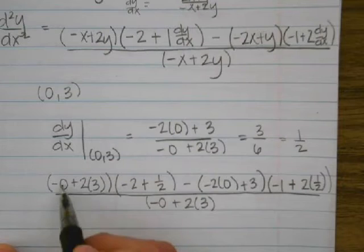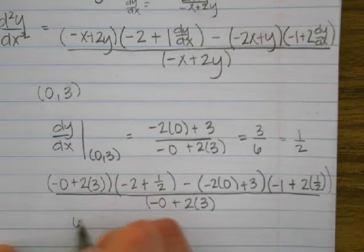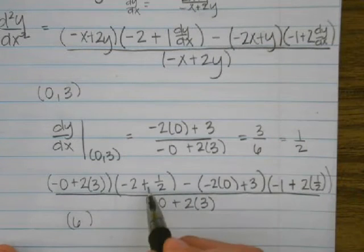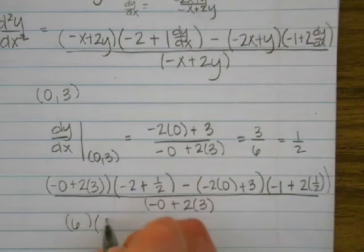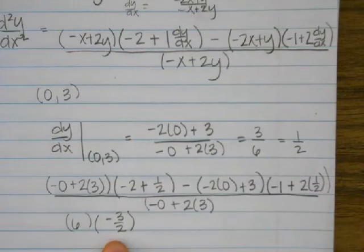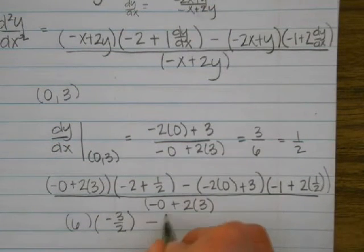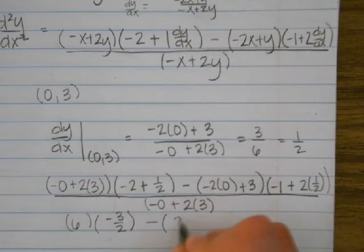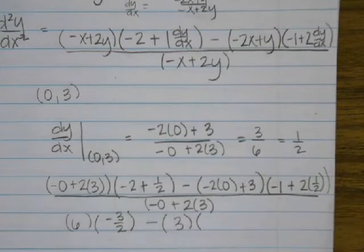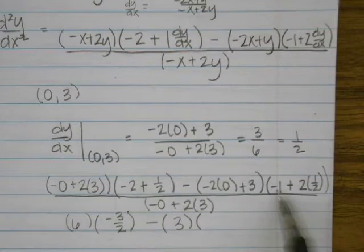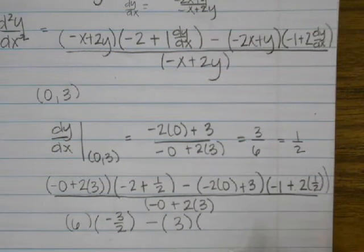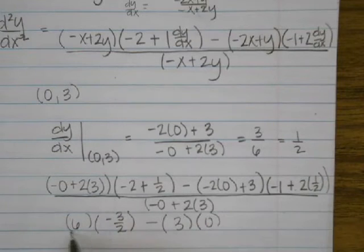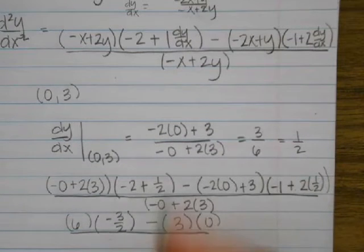So we've got, that's 6 times negative 3 halves, or you could say negative 1.5, however you want to do that is fine. Minus 3 times, this is negative 1 plus 2 times 1 half is 1, so negative 1 plus 1 is 0, divided by 2 times 3 is 6.